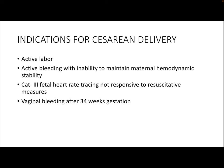Indications for cesarean delivery include: if the mother is in active labor, if she is actively bleeding with inability to maintain hemodynamic stability, if there is a category 3 (non-reassuring) fetal heart rate tracing not responding to resuscitative measures such as IV fluids, left lateral decubitus position, stopping oxytocin, and starting tocolytic agents. Vaginal bleeding occurring after 34 weeks of gestation is also an indication for cesarean.